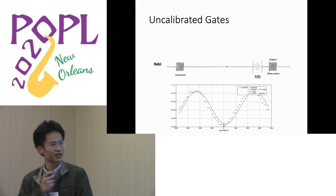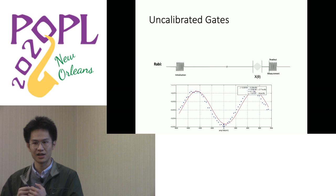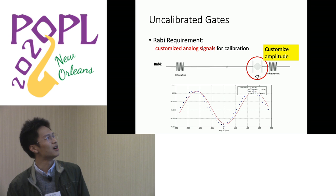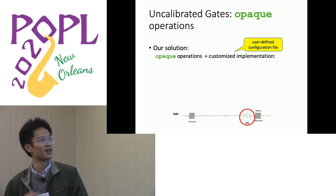The next requirement is uncalibrated gates. Here is an example of the Rabi experiment. In this experiment, we apply X gates with the same envelope but different amplitudes to calibrate the angle of X rotations. The goal is to customize the amplitude. Our solution is to provide opaque operations along with a customized implementation residing in a user-defined configuration file.